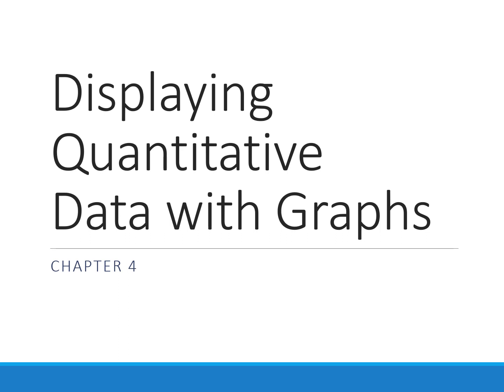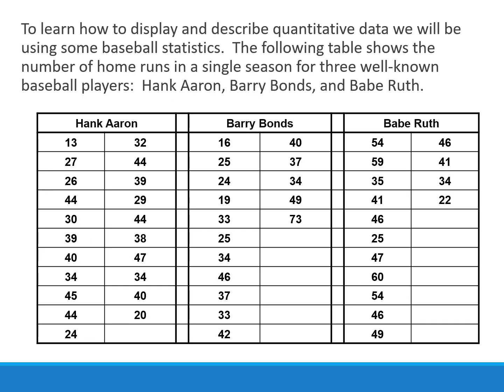Chapter four focuses on displaying quantitative data. This slide shows the data sets we're going to be using for this set of notes: the number of home runs hit in a single season by three well-known baseball players, Hank Aaron, Barry Bonds, and Babe Ruth.